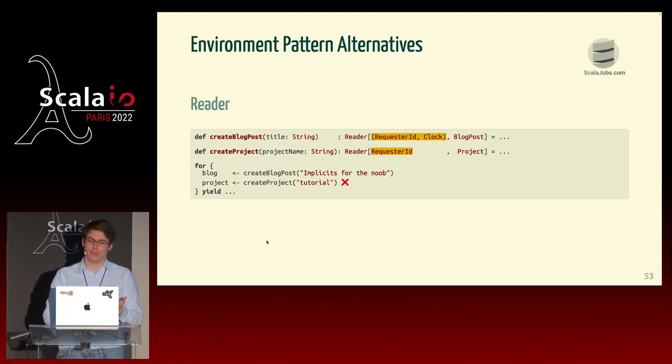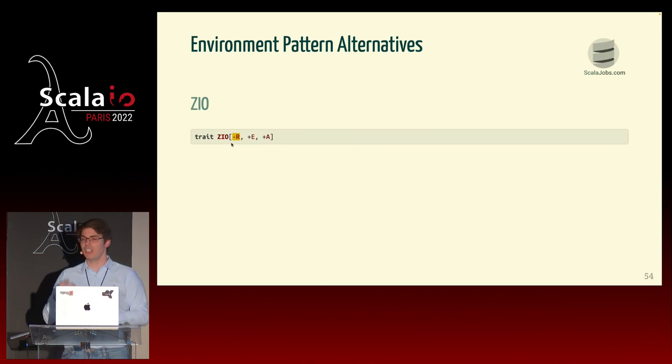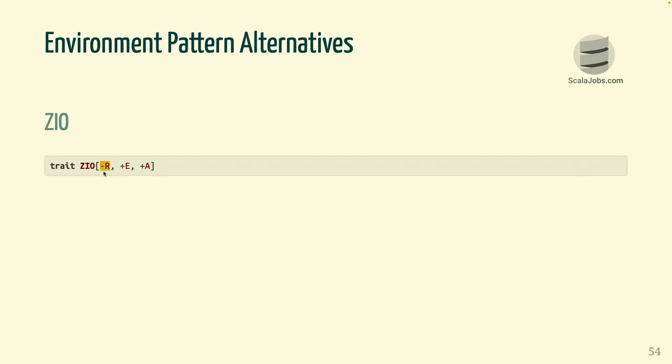We can still keep the idea of the reader, and it's actually been used in ZIO. ZIO has this R type parameter — R comes from reader — and R defines what your environment parameters are. The trick is to use variance in Scala to automatically narrow or expand your environment parameters. Instead of manually adjusting your environment based on your functions, it does it automatically using variance. I think it's a very clever trick that keeps the best of both worlds.